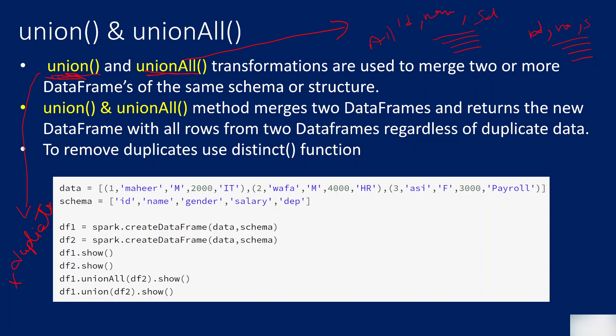In PySpark, these two functions will help you to merge the rows from two different DataFrames. But when it comes to removing duplicate rows, they won't do that in PySpark. Whether you use union or union all, both functions do the same thing — they return all rows from both DataFrames without removing duplicates. If you want to remove duplicates, there is something called the distinct function, which I'll demonstrate.